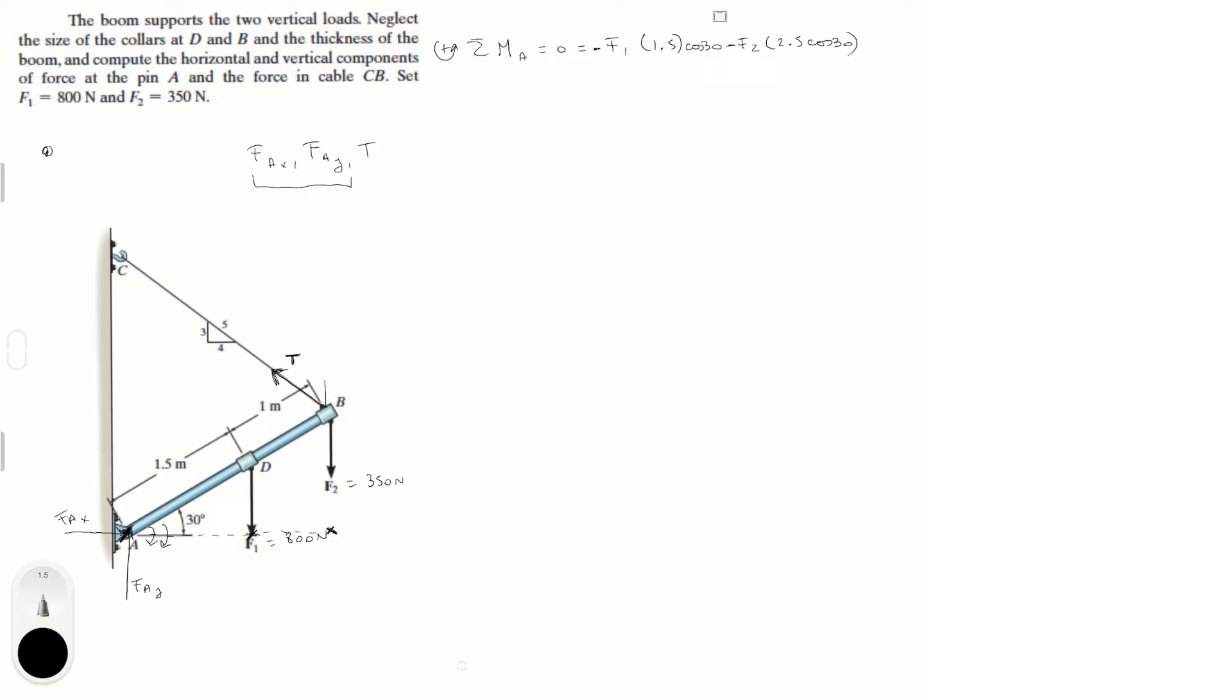Now you know that the tension has a y component and an x component. Let's call it Tx and Ty. Now you know that Tx is equal to 4 over 5 times T, and Ty is equal to 3 over 5 times T because of this triangle right here.